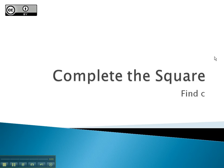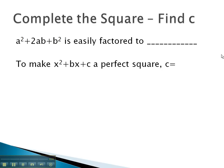In this video, we will use a process called completing the square to make a trinomial into a perfect square. You may remember an expression like a² + 2ab + b² is easily factored to the square root of the first term, the sign from the middle, and the square root of the last term, and that expression is squared.